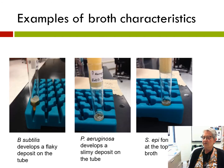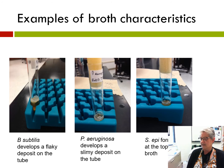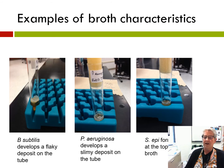Here are a few examples taken from our lab. Bacillus subtilis on the left develops a flaky deposit on the tube. Pseudomonas aeruginosa develops a slimy deposit at the top surface of the broth, and Staphylococcus epidermidis forms a ring at the top of the broth.